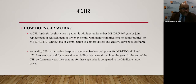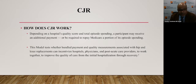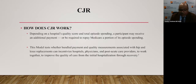How does CJR work? A CJR episode begins when a patient is admitted under either MS-DRG 469 — major joint replacement or reattachment of lower extremity with major complications or comorbidities — or DRG 470 without major complications, and it ends 90 days post-discharge. Annually, CJR participating hospitals receive episode target prices for DRGs 469 and 470. Services are paid for as usual when billing Medicare throughout the year, but at the end of the CJR performance year, spending for these episodes is compared to the Medicare target price. Depending on the hospital's quality score and total episode spending, a participant may receive an additional payment or be required to repay Medicare a portion of its episode spending.